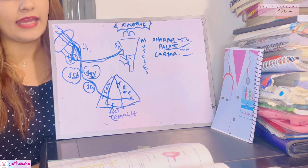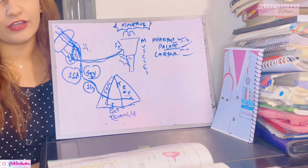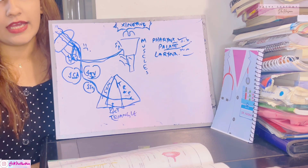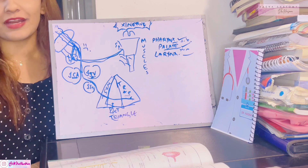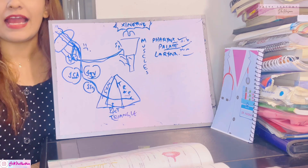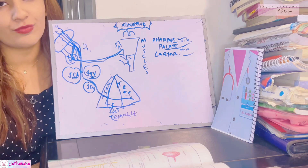All the pharynx, palate, and larynx muscles will also be paralyzed. That is all you need to know about the accessory nerve. I really hope you understood — don't forget to subscribe to my channel, and thank you so much for watching.